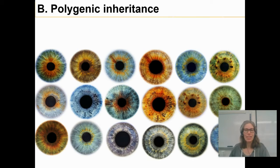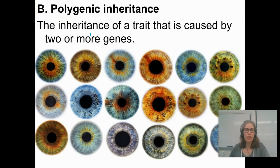There's a lot of different shades of brown, a lot of different shades of blue, lots of different shades of green or hazel. And then there's some even cooler stuff, like gray eyes or sort of like yellowish eyes, like brownish yellowish eyes. So the inheritance of a trait that's caused by two or more genes is called polygenic inheritance.